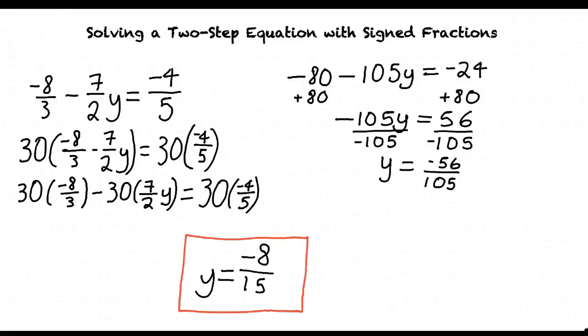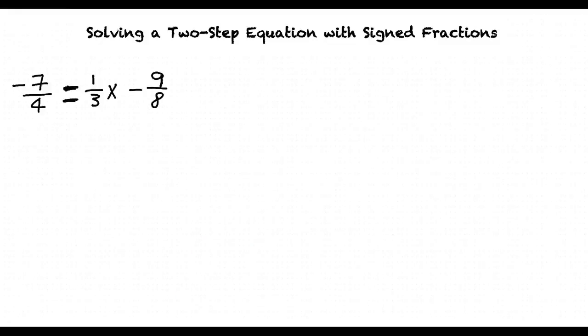That makes sense, but can we do another quick example? Sure. In this example, let's address another method of finding a common denominator. Let's use the example problem, negative 7 fourths equals 1 third x minus 9 over 8.